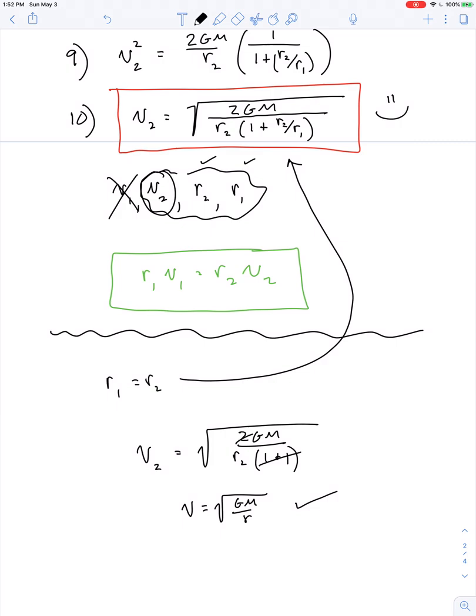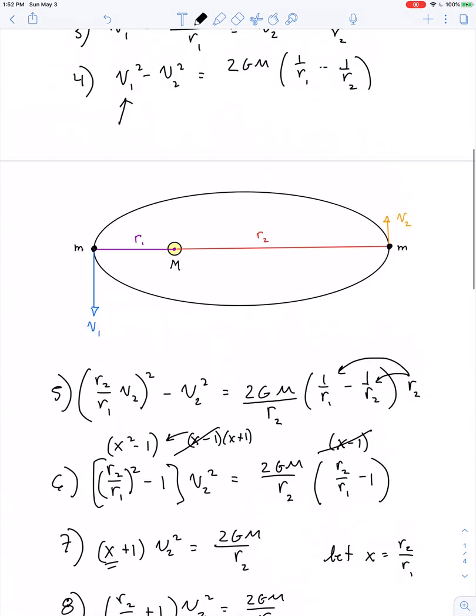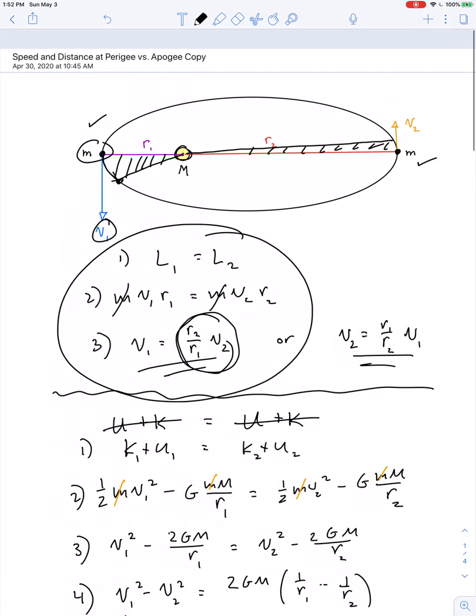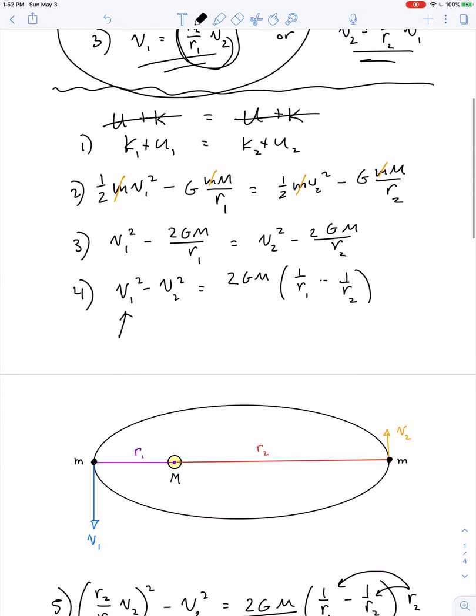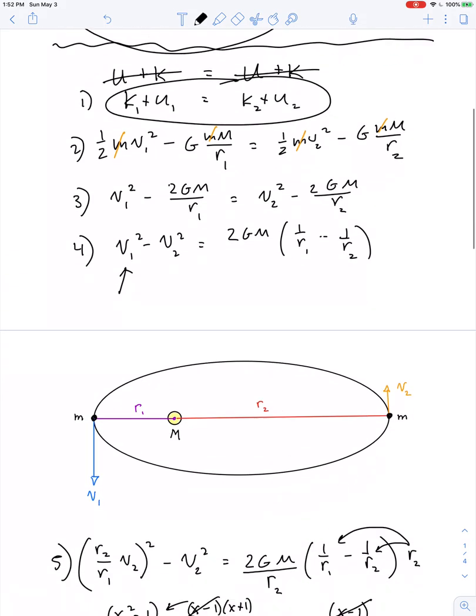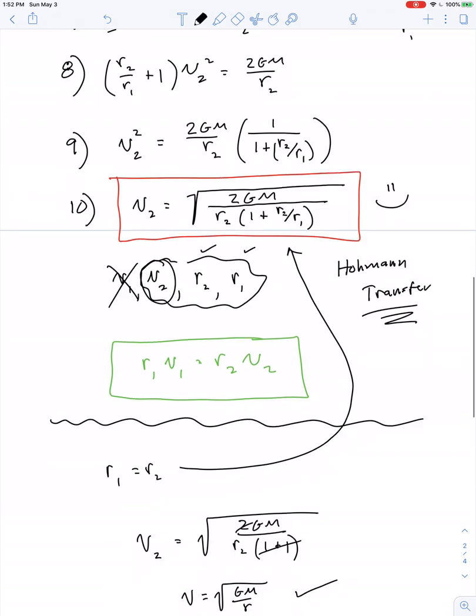So let's see if we can apply these equations in another video lesson where we investigate something known as a Hohmann transfer. For now, just keep in mind that two quantities are conserved for planets as they orbit in elliptical paths. Angular momentum is conserved, and mechanical energy is conserved. And from that, we can derive two useful equations.